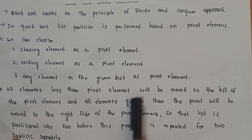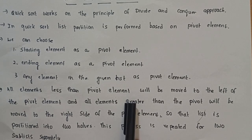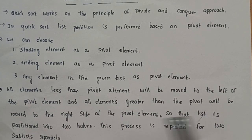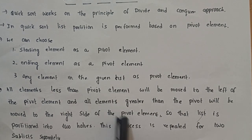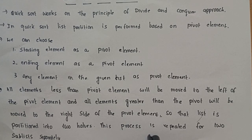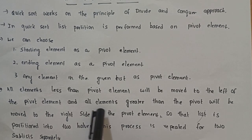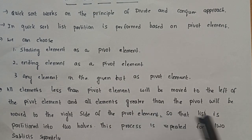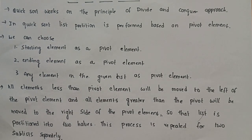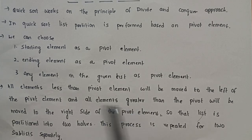All elements less than the pivot element will be moved to the left of the pivot, and all elements greater than the pivot element will be moved to the right side of the pivot. The pivot element is in its exact position. The list is divided into two halves based on the pivot element, and then QuickSort is recursively applied to the left and right sublists.